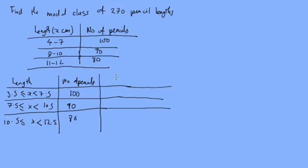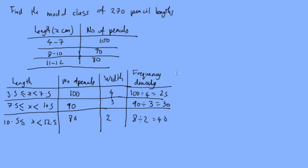Now here we need to look at the width. So the width of this is four centimeters, the width of this is three centimeters, and the width of the final one is two. And now we need to calculate the frequency density. And so that would be 100 divided by 4 which is 25, 90 divided by 3 which is 30, and 80 divided by 2 which is 40.